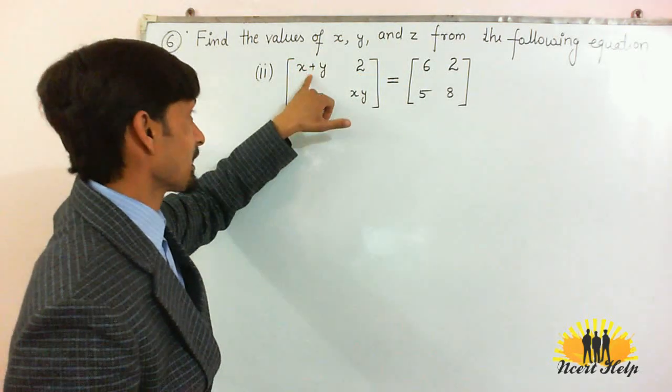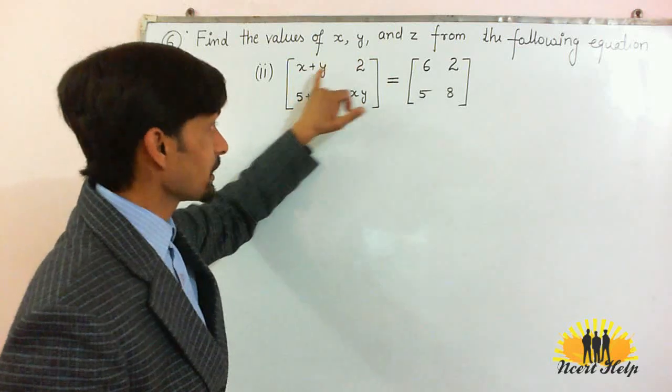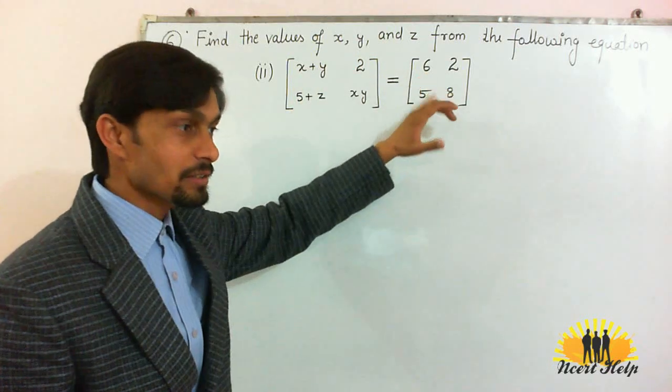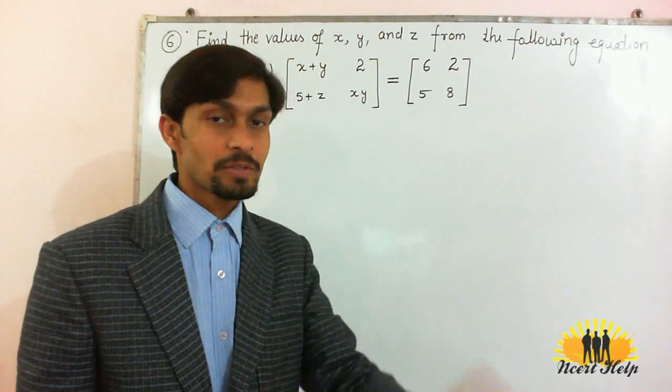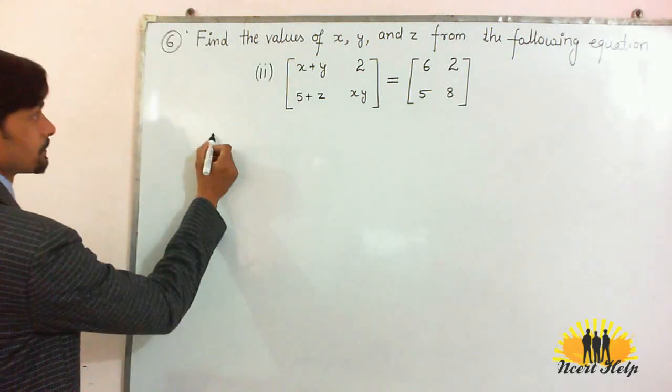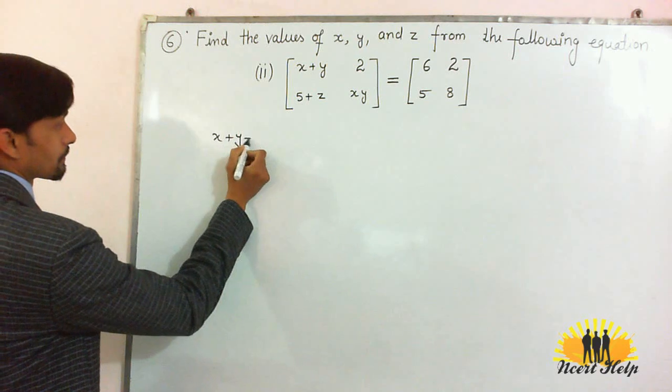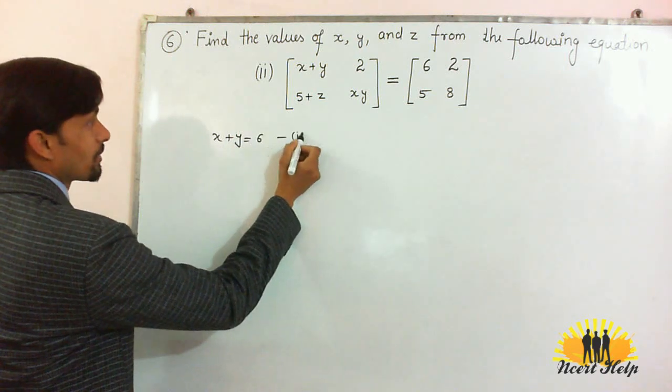But here it is x plus y and here it is 6. The first element is x plus y and here it is 6. It means if corresponding elements are equal, then x plus y must be 6. This is equation number 1.